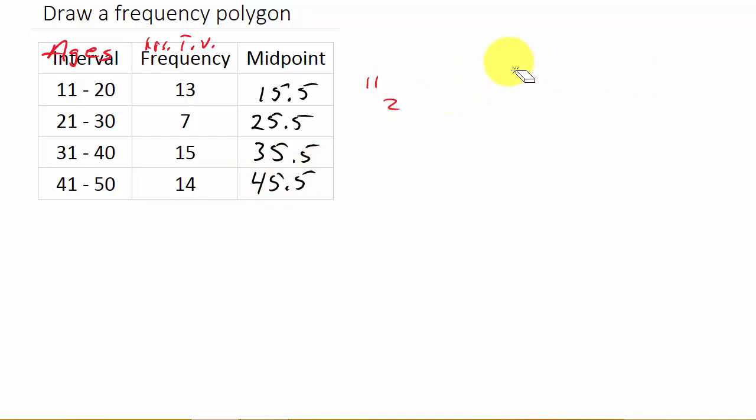Alright. So now that we have the midpoints, we can go ahead and draw our frequency polygon. So the way that we do that is, let's come down here like this. Okay. And we have, let's see, we got 15.5, we've got 25.5, we've got 35.5, and we've got 45.5.